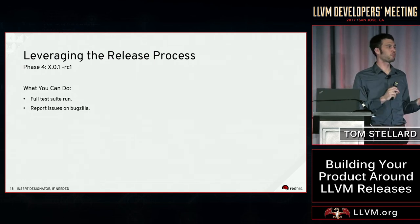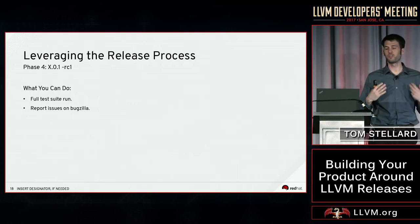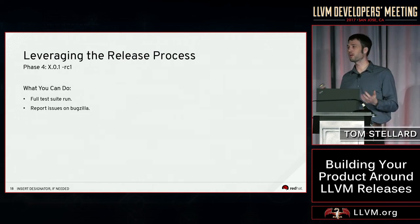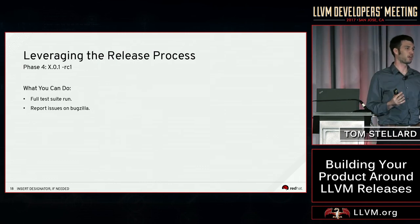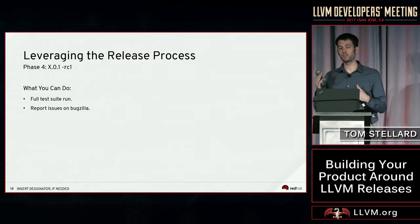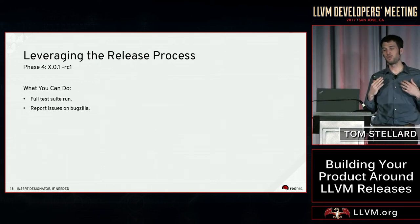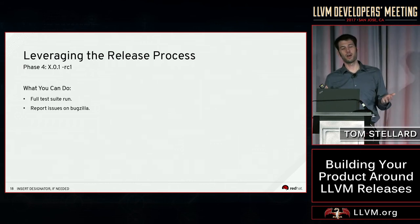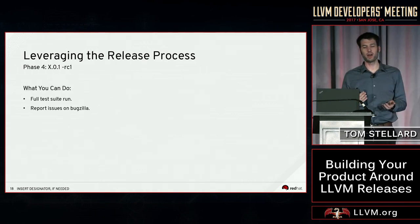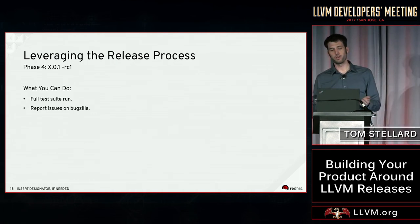Phase four is the first release candidate of the stable release. This is similar to the previous RC cycle — do a full test suite run and report issues on Bugzilla. One thing to note: for stable releases, everything has to be ABI and API compatible. But even if you have a patch that breaks the API, it doesn't hurt to just ask — maybe someone can look at it and it can be useful to people who don't care quite as much about API or ABI stability.